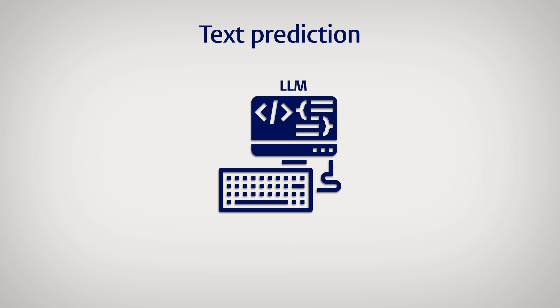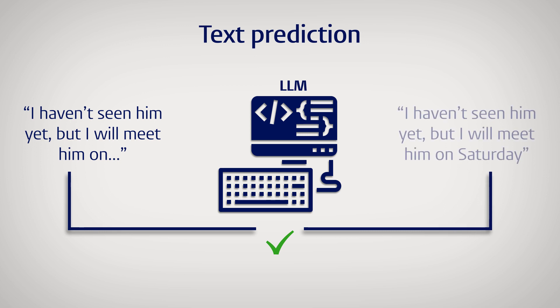Suppose that I say, I haven't seen him yet, but I will meet him on... Well, I will meet him on Monday maybe? Tuesday? Saturday? Our best prediction here might be probabilistic. There is about a 1 in 7 chance for each day of the week.